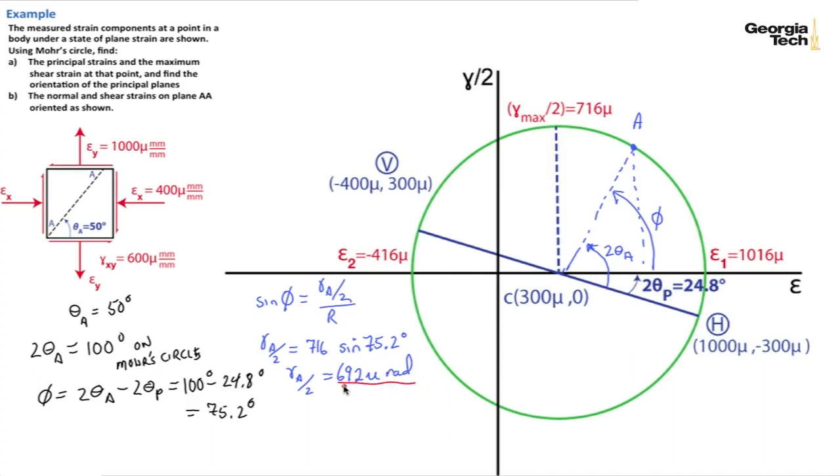We can do a similar approach to find the normal strain at point A. We want this distance, which will be the adjacent side, so it's the cosine. We have epsilon A equals 716 times cosine of 75.2 degrees. But that's only this distance here. We also need to add 300 to it to get out to point A. So it's plus 300 mu. Epsilon A ends up equaling 483 mu millimeters per millimeter.